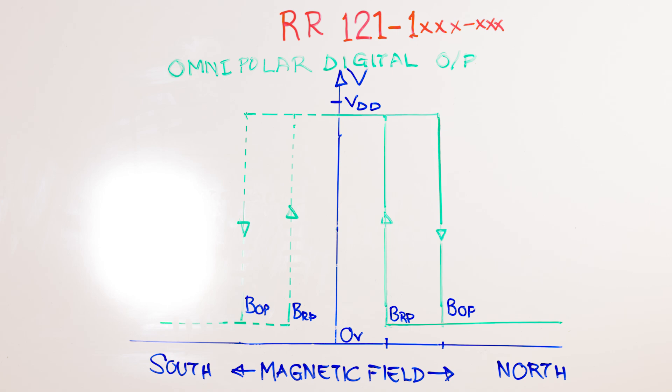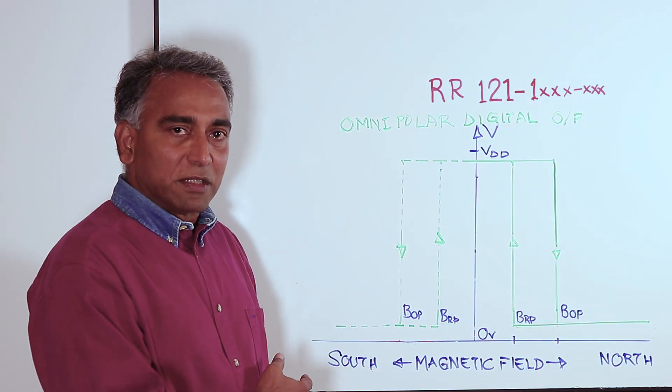This has great advantage in an application. Because the sensor is completely agnostic to the polarity of the magnet, it offers great flexibility in the installation of the magnet in the product. The magnet can be installed without any regard to what pole of the magnet is facing the sensor. The sensor will operate equally well with both polarities. That's a huge cost advantage.